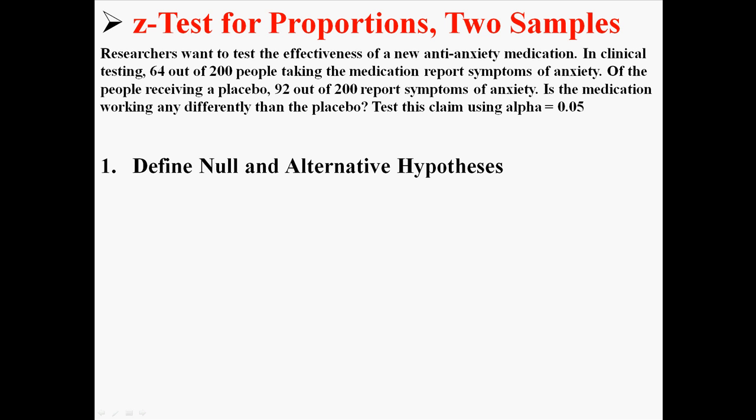So first, our hypotheses. H0, our null hypothesis, is that the two proportions are equal. And H1, our alternative hypothesis — what we're testing — is to see if the two proportions are not equal.